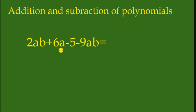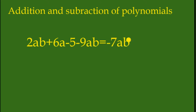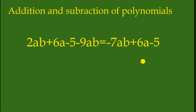2ab and negative 9ab are like terms — they have the same variables ab and ab. This is positive 2 and negative 9, same variables but opposite signs, so this is subtraction: negative 7ab. Next we have 6a and negative 5 — they are not like terms, so copy only: positive 6a and negative 5. So our answer is negative 7ab plus 6a minus 5.